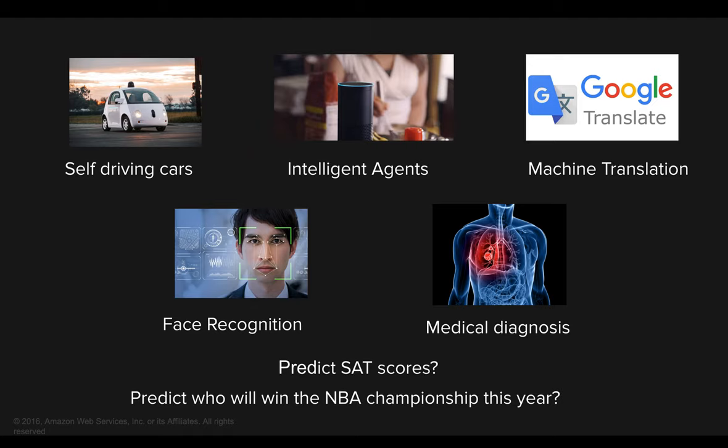Then we have intelligent agents, which are simply smart speakers in our house, like the Amazon Echo or Google Home. Machine translation also makes our lives easier when we travel across the globe, helping us understand different languages and cultures.